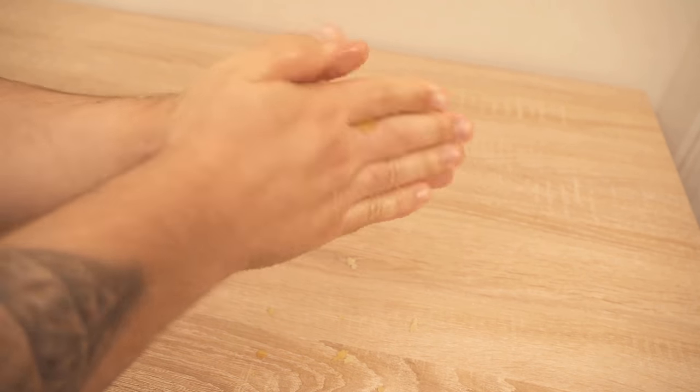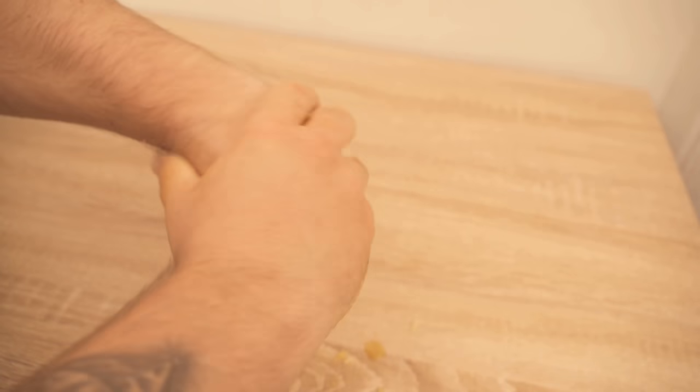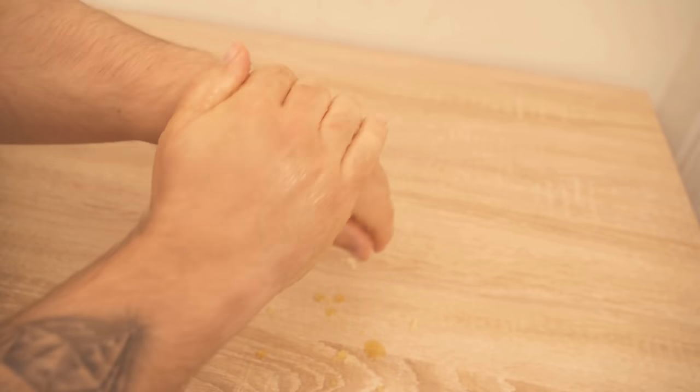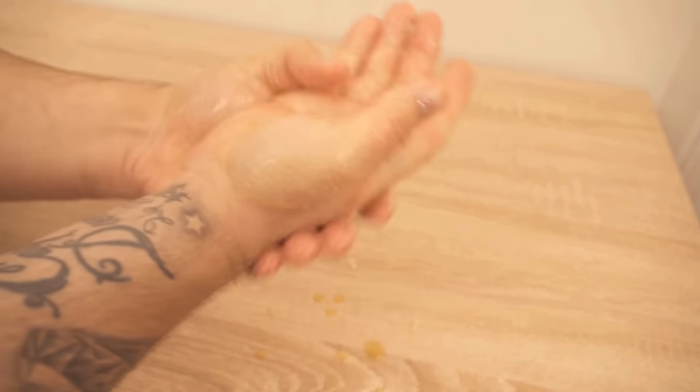By rubbing it into the hands now we provide this peeling effect which is caused by the sugar. Because this is nice coarse grained and can simply remove dead skin cells and everything that no longer belongs to the hands immediately.